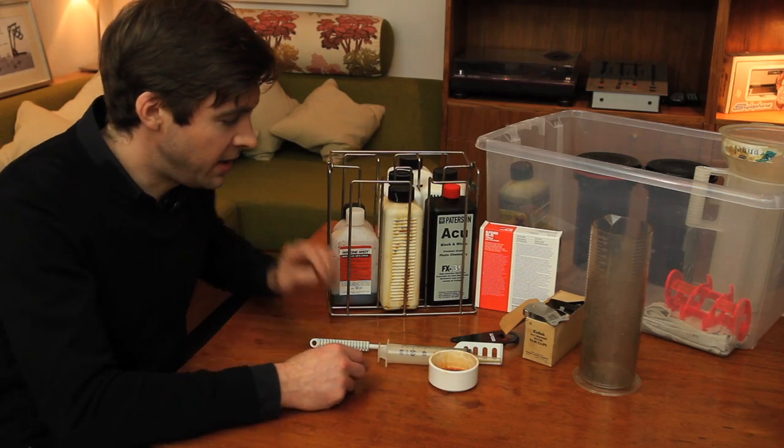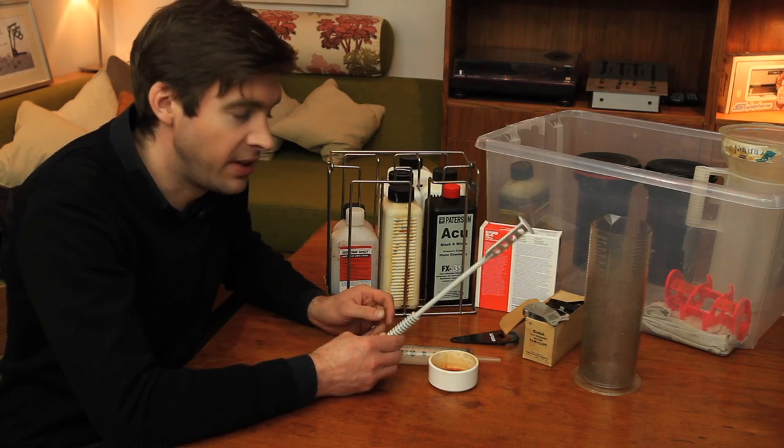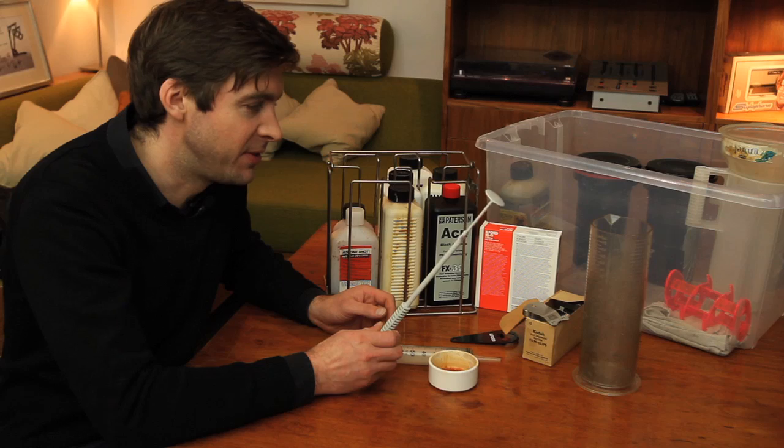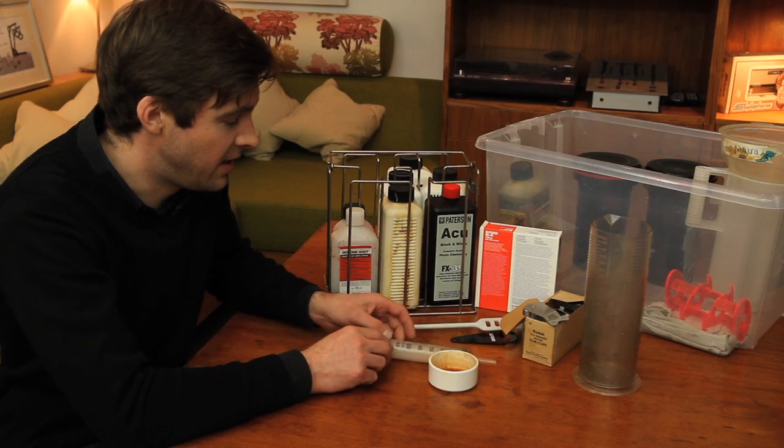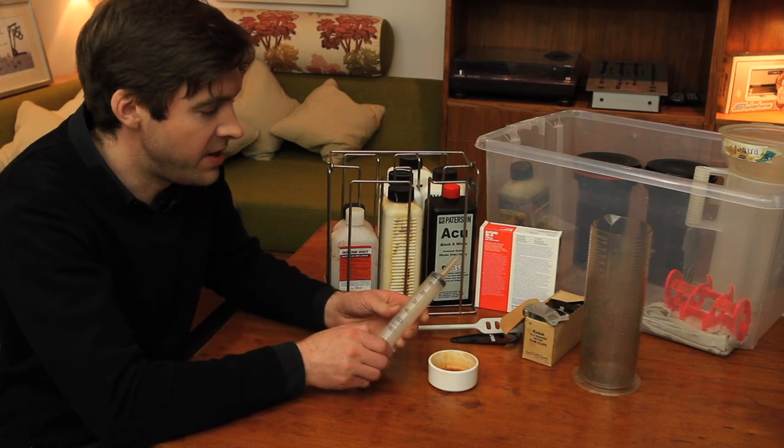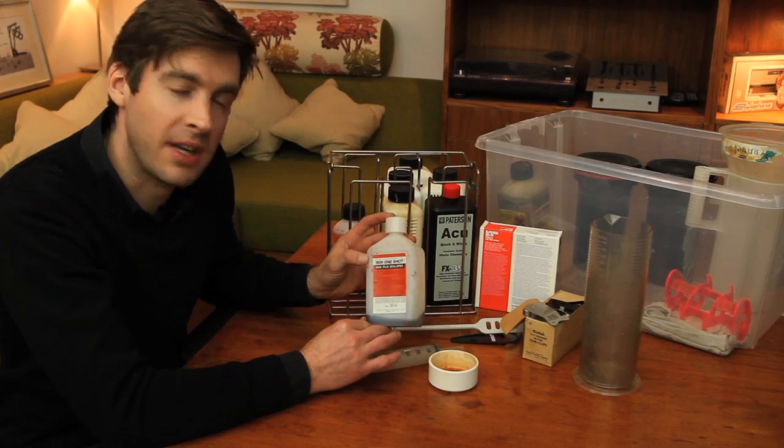And then, my little bits of things that I really enjoy. The most simple thing, which I got recently, is this chemical stirrer. It's brilliant. Better than using a thermometer. I have a syringe. I find that really useful for when you start playing with Rodinal, which is one of my favourite chemicals.